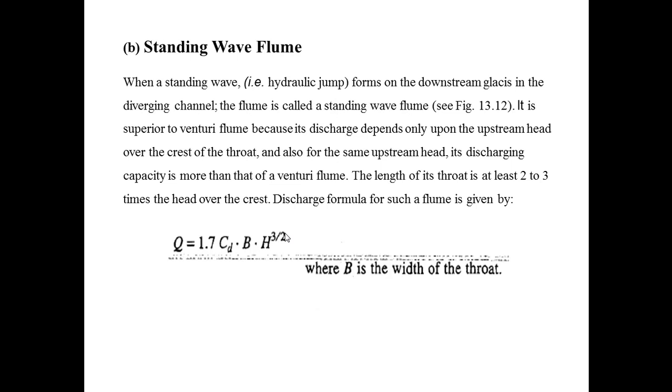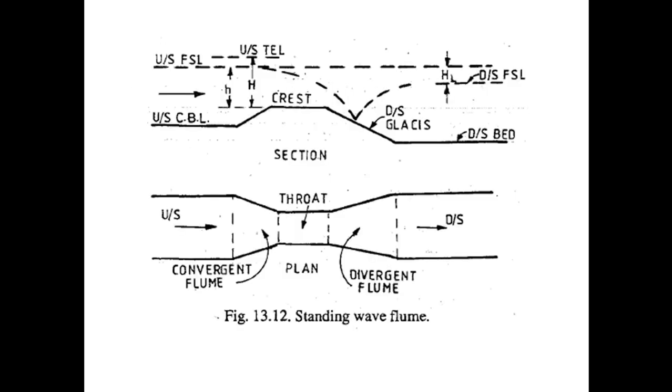The next type is the standing wave flume. When a standing wave, that is hydraulic jump, forms on the downstream glacis in the diverging channel, the flume is called a standing wave flume as shown in figure 13.12. This is the diagram of the standing wave flume where the hydraulic jump is created as the high velocity water moves into the lower velocity zone, resulting in a head rolling jump on the downstream side of the glacis.